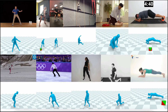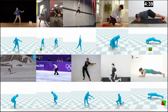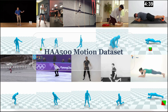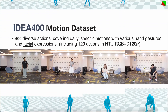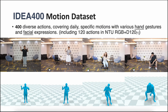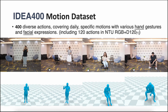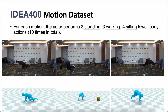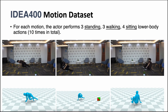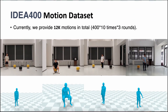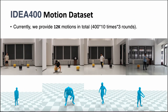We also re-annotate existing motion and action recognition datasets, such as HAA500, Hummin, and ASD. Here we show some cases from HAA500. In addition, to enrich our motion types, we introduced the IDEA400 motion dataset to replace NTU-RGBD-120, recorded videos by a single camera, which contains 400 daily and specific actions with various hand gestures and facial expressions. For each motion, the actor performs three standing, three walking, and four sitting lower-body actions, ten times in total. Currently, we provide 12,000 motion sequences in total.